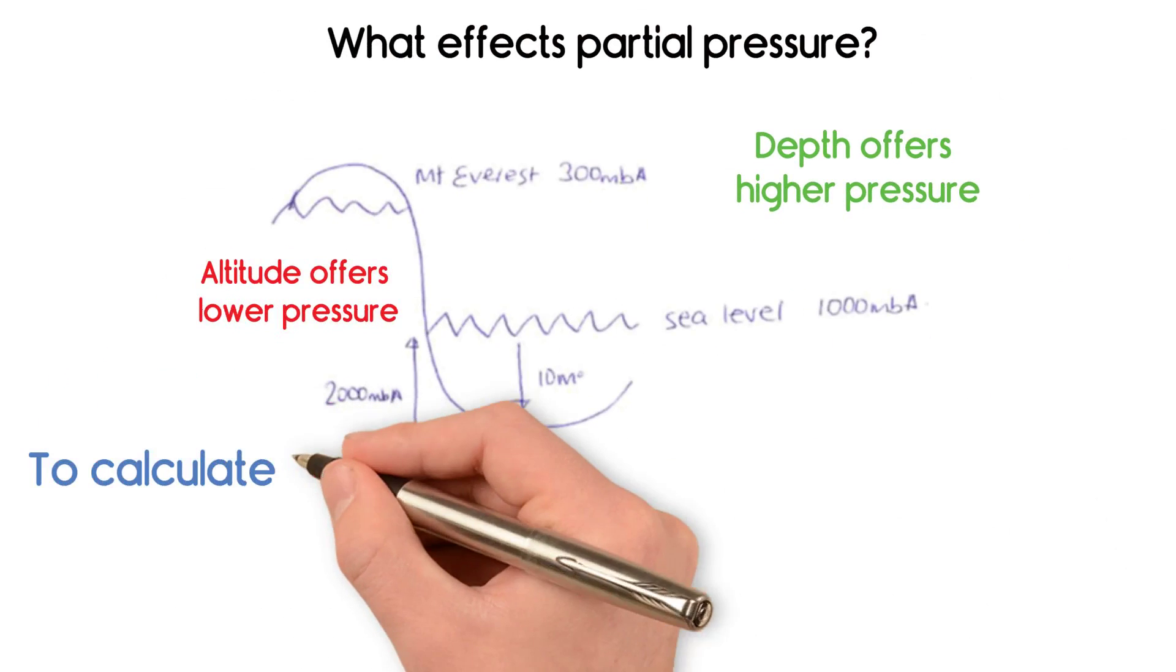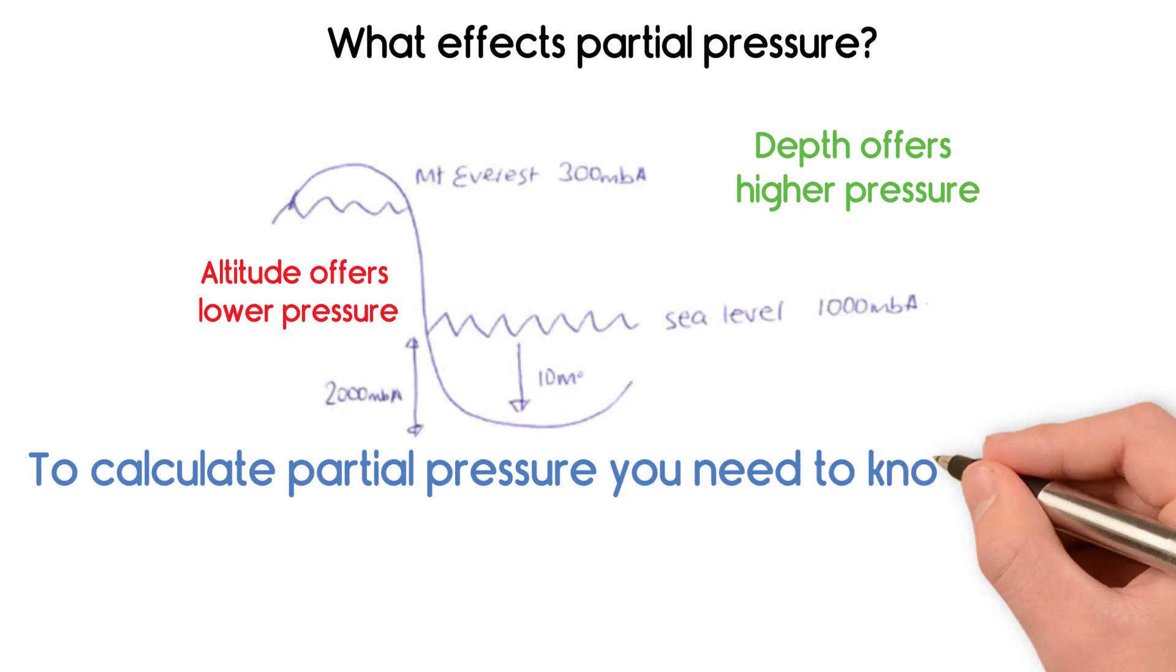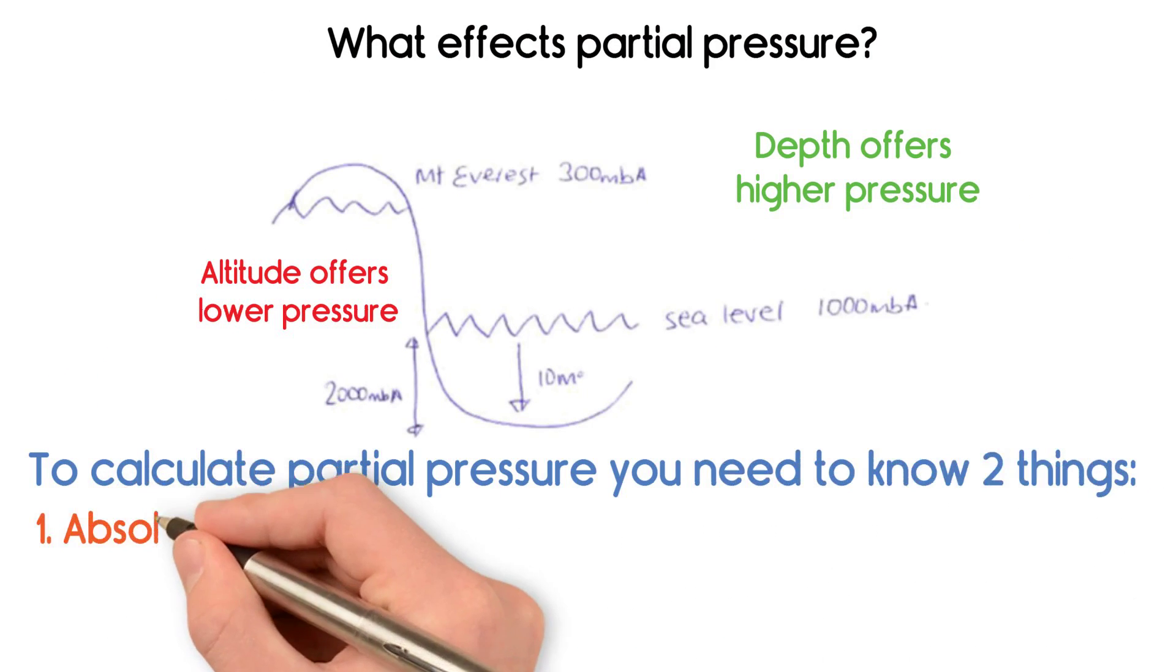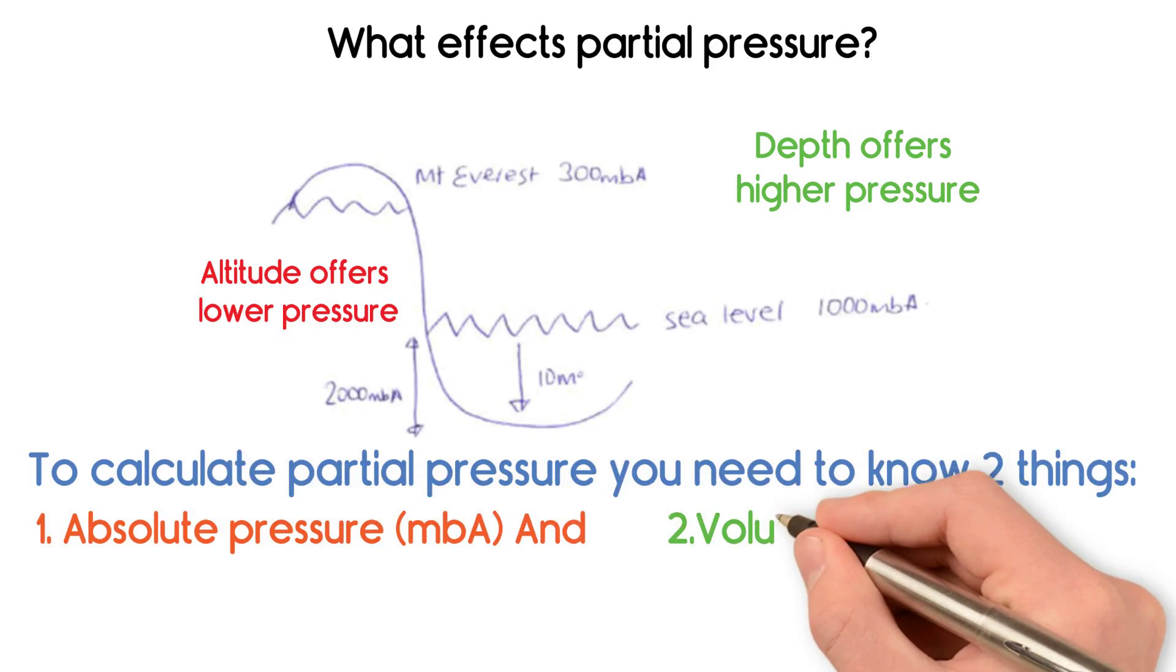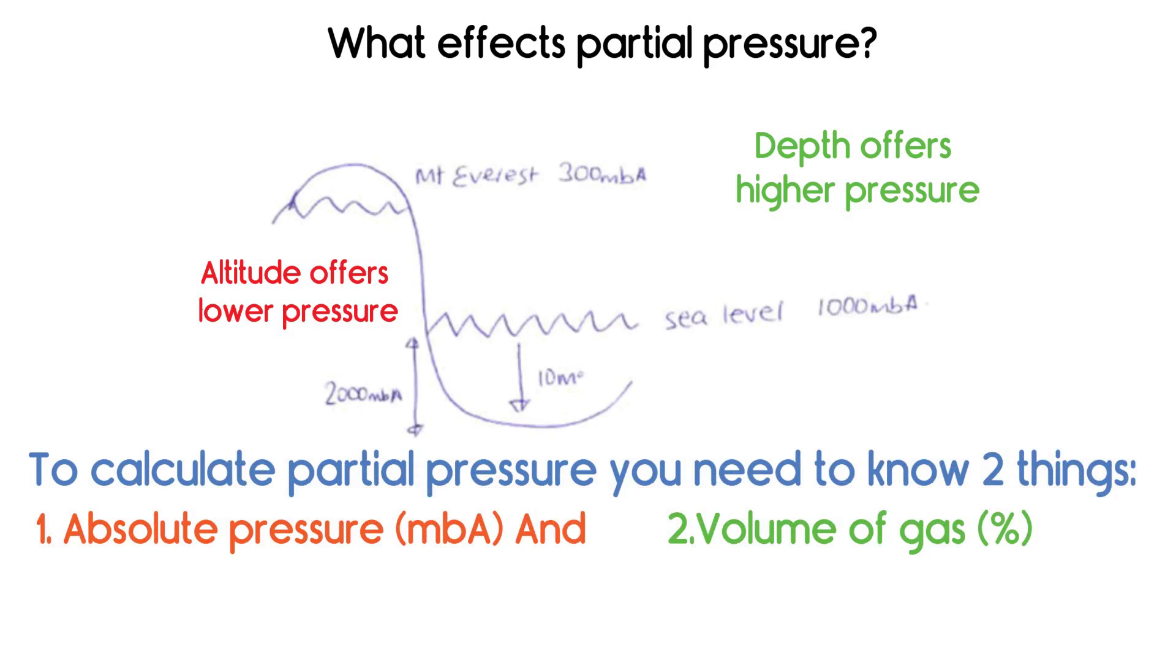To calculate partial pressure, you need to know two things: 1. Absolute Pressure and 2. Volume of Gas Percent.